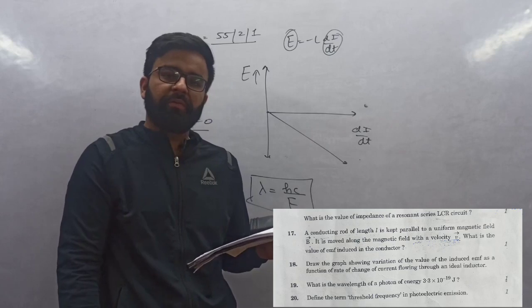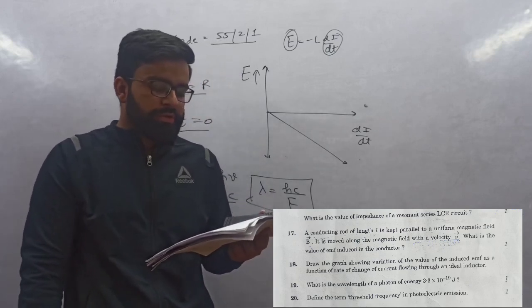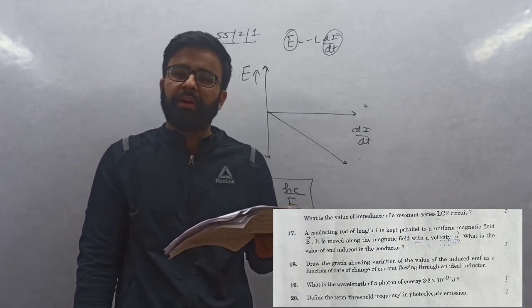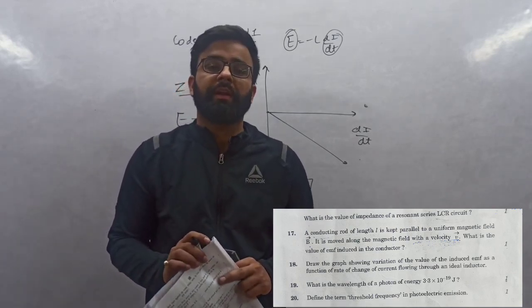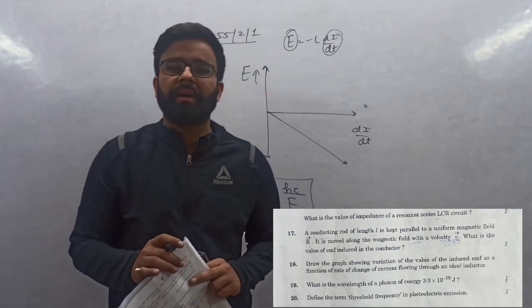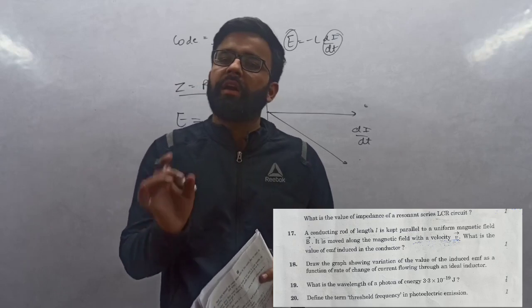Question 20: Define threshold frequency in photoelectric emission. Threshold frequency is that frequency below which there is no photoelectric emission, below which photoelectrons do not come out. It is the minimum frequency below which photoelectric current is zero.